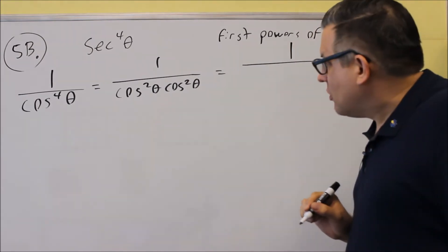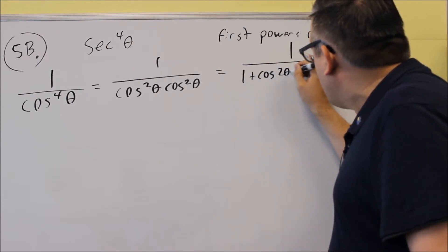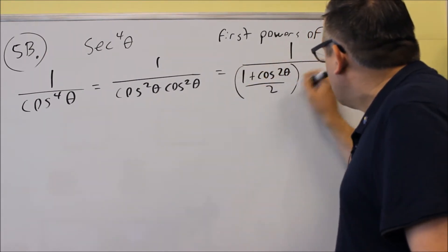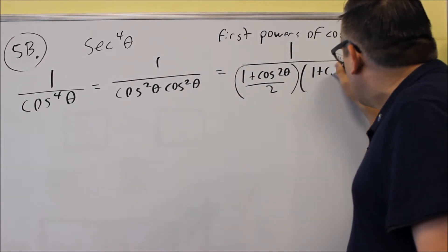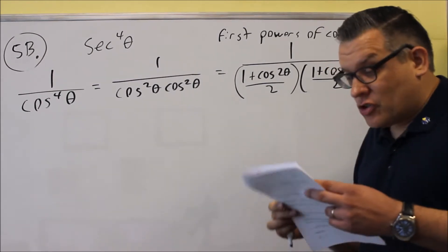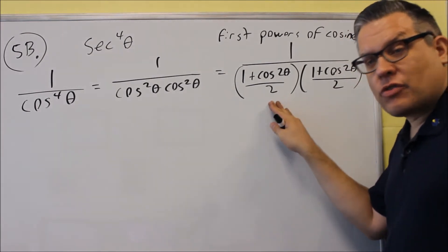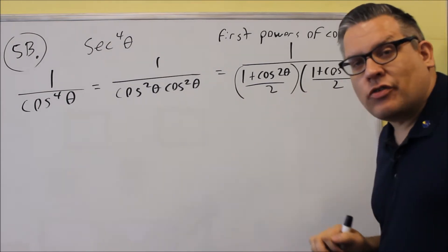So we have 1 over all this. So here's a power-reducing formula. It's going to be 1 plus cosine 2 theta over 2 and 1 plus cosine 2 theta over 2 for this one. So we're using the same formula for each. We're using a power-reducing formula for each of these cosines individually.